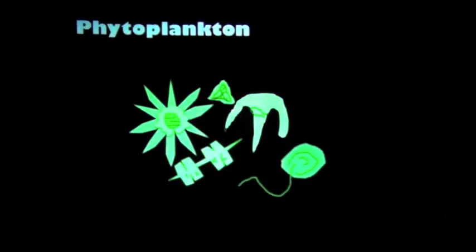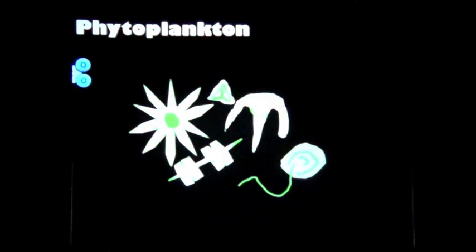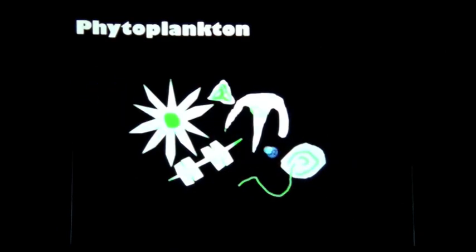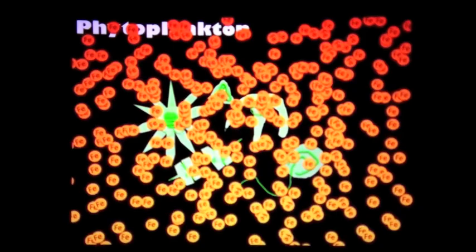Phytoplankton are diatoms or microscopic plants which make up the base of the marine food chain. Phytoplankton, like terrestrial plants, use photosynthesis to absorb carbon dioxide and produce oxygen. Iron is the limiting nutrient for phytoplankton growth and it is necessary for all photosynthesis.